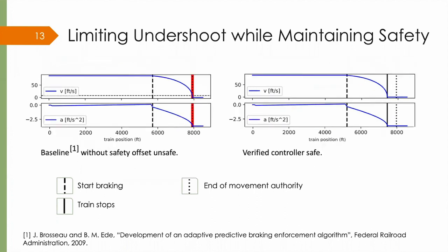Suppose we were to remove the safety offset, then the baseline controller becomes unsafe. The red highlighted region indicates where the train has a non-zero velocity even past the end of movement authority.